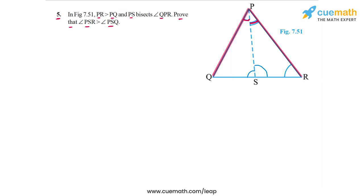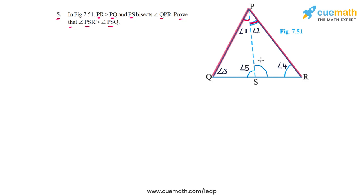Let's number the angles — I always find it easier in geometry, wherever a lot of angles are involved, to number them so we can keep track easily. PS bisects angle QPR, so let's call those two equal angles angle 1 and angle 2. The angle at Q is angle 3, the angle at R is angle 4, angle PSQ is angle 5, and angle PSR is angle 6.